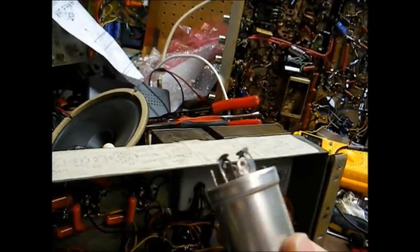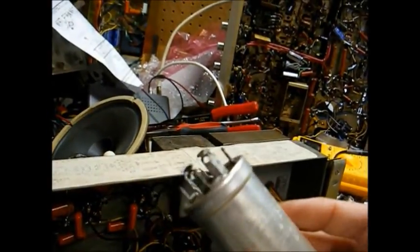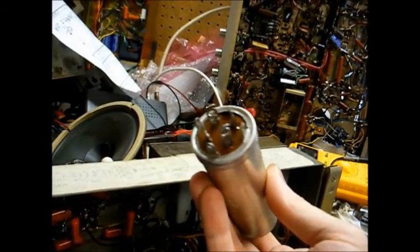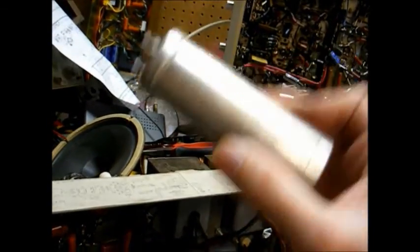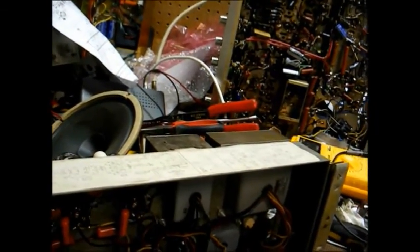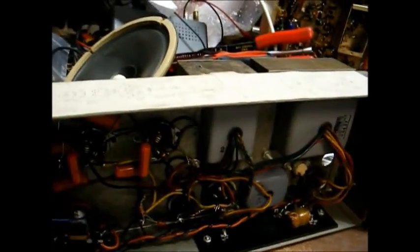And when you do find them, they're a little pricey. So I just went ahead and ordered an original equipment, newly manufactured, multi-section filter capacitor can, which is a direct drop-in replacement for these amplifiers.